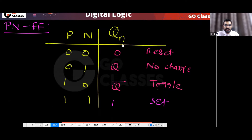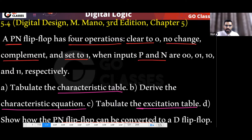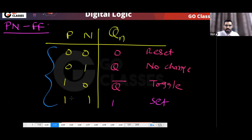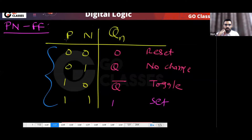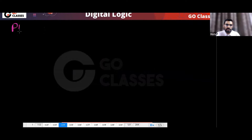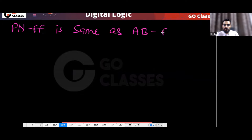Can you notice? This question we have already seen. This PN flip-flop — reset, no change, complement, set — this is actually your A-B flip-flop that we just solved. This PN flip-flop is nothing but your A-B flip-flop from the previous question.